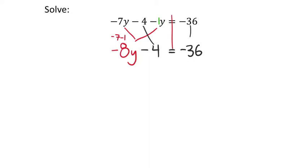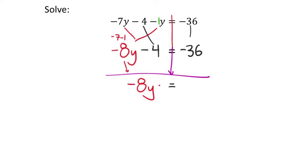I'll drop the negative 4, keep the equal sign, and drop the negative 36. Now we have an equation with no need to combine like terms on either side, so we can solve using Principles of Equality. I want to isolate the negative 8y — I don't want anything added or subtracted to it. Since it's a negative 4 term being subtracted, I add 4 to both sides. That zeros it out, leaving negative 36 plus 4, which is negative 32.